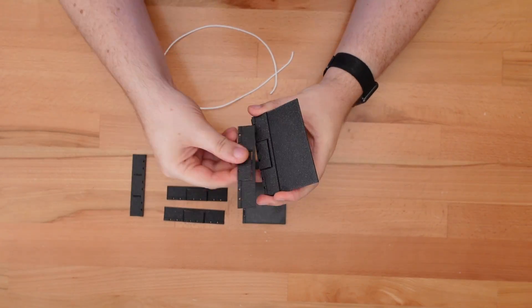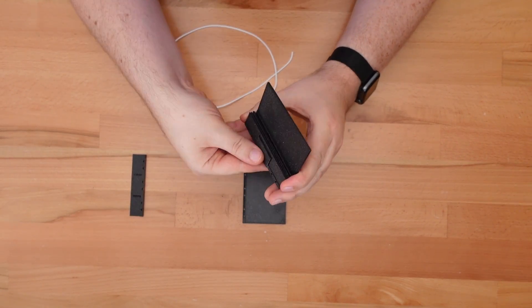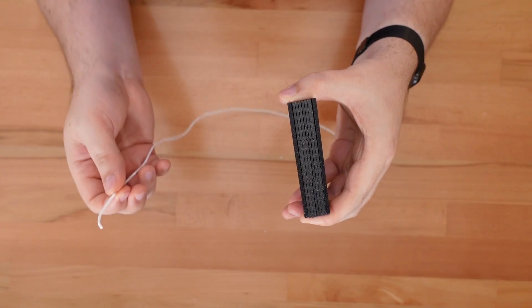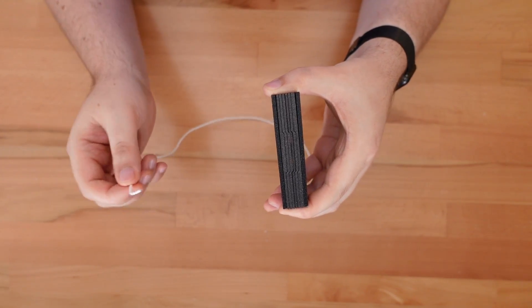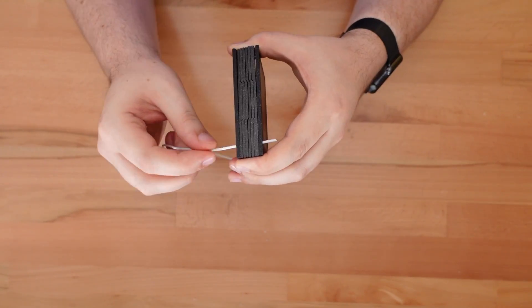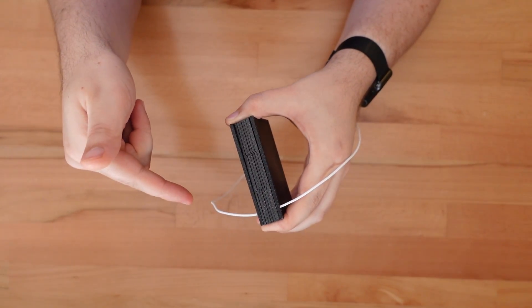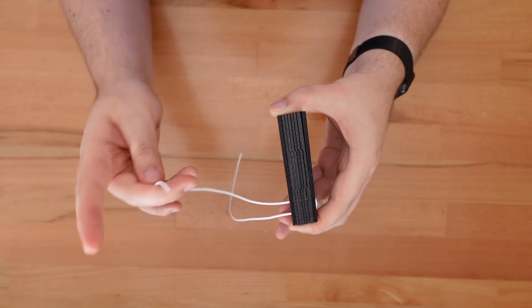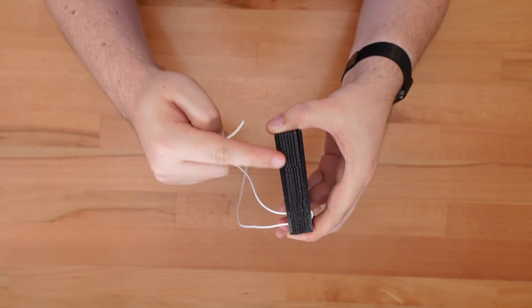To assemble we just line up the parts and thread the filament from the back toward the front cover. Now we'll just thread it back again and back and forth a few more times until we've gone all the way up the spine.